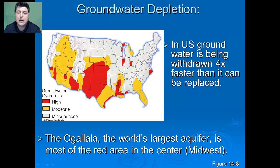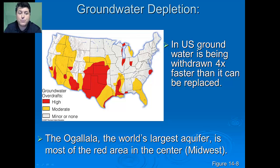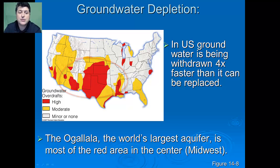We've been pumping groundwater for a long time, and in the United States we're withdrawing it four times faster than it can be replaced. The Ogallala Aquifer is the world's largest aquifer, found here in the Midwest. In the red areas you can see we're pumping too fast, and some wells are actually going dry.